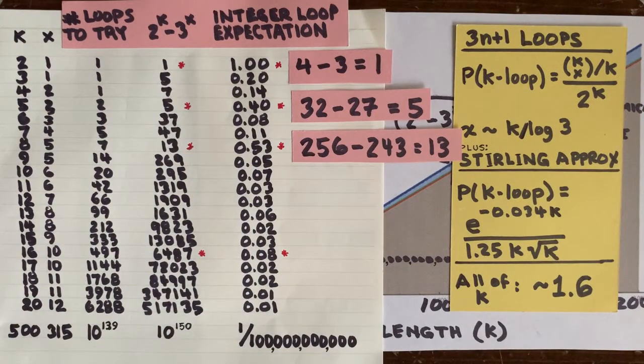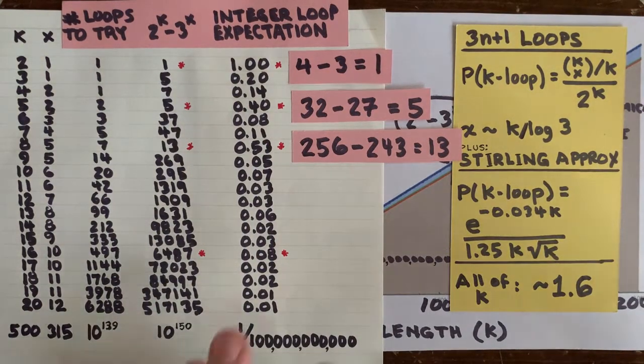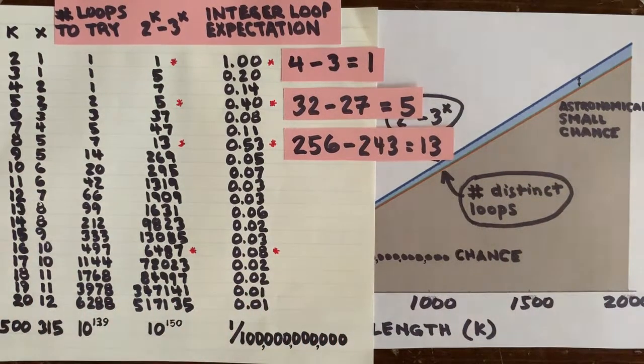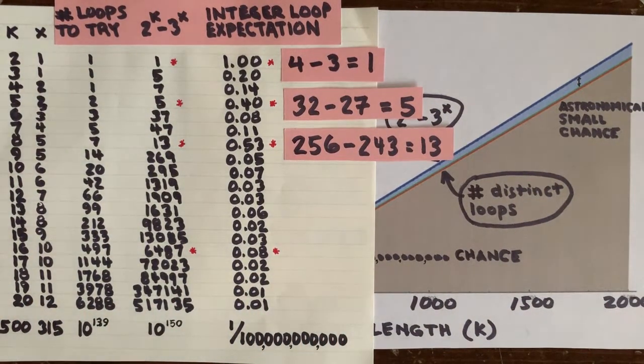And we've checked a ton of loop lengths empirically, and after that the chances look really astronomically small. So maybe the only integer loop we're going to get is the one we already got.